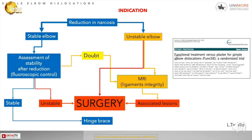In the case of elbow dislocation, the first step is reduction under anesthesia. After that, the elbow is either stable or unstable. If stable, we proceed with fluoroscopic stability assessment, and if confirmed stable, we apply a hinged brace for one week or more. If unstable, surgery is indicated. In the case of an unstable elbow, we can perform an MRI to evaluate the ligaments, or proceed directly to surgery.